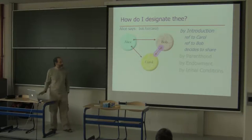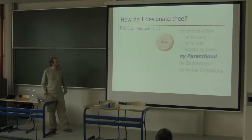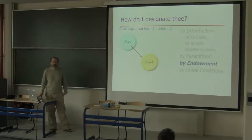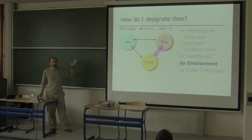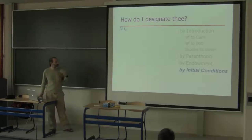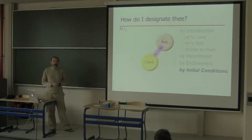Bob can now make use of Carol's public interface. If Bob already exists and Carol does not, then if Bob creates Carol, at the moment of creation Bob holds the only pointer to Carol. If Carol already exists and Bob does not, then a third object such as Alice that creates Bob can choose to create Bob so that he comes into existence already endowed with the pointer to Carol. Finally, if nothing exists, the initial configuration might be one in which Bob already points to Carol.